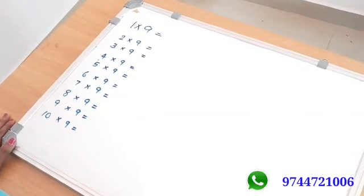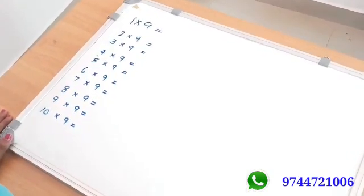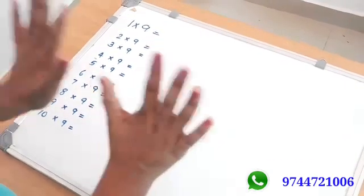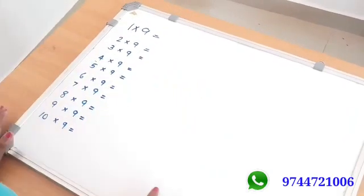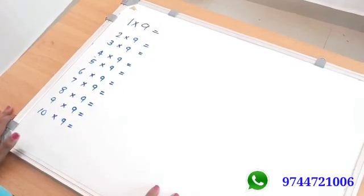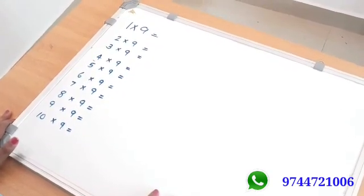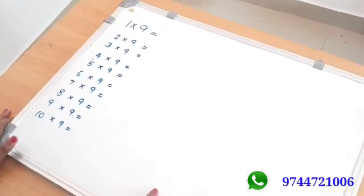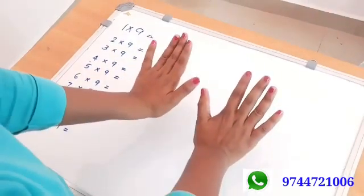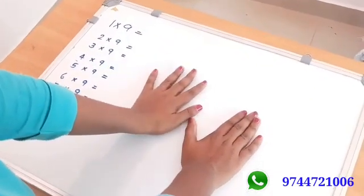Okay, we are looking at the nine multiplication table for our students. We are looking at the fingers method for the nine times table. Let's take a look at this, parents and teachers. What do we do? We have 10 fingers. Let's take a look at our left hand.